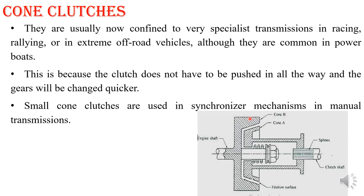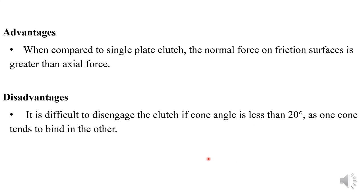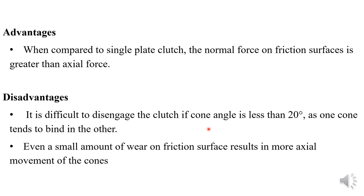Advantages and disadvantages of the cone clutch: the advantage is that the normal force on the friction surface area is greater than the axial force, so due to the larger area it provides a better advantage compared to other types. The disadvantage is that it is difficult to disengage the clutch if the cone angle is less than 20 degrees, because the cones can bind together. Even a small amount of wear on the friction surface results in more axial movement of the cone.